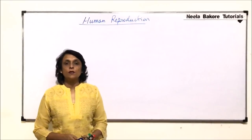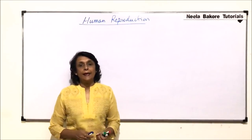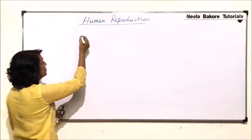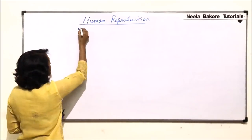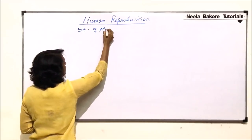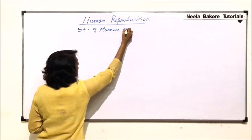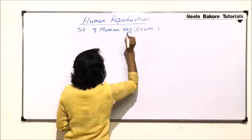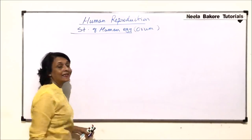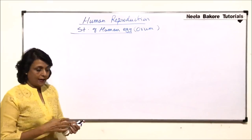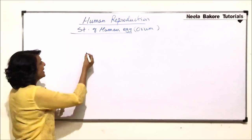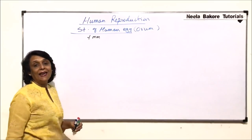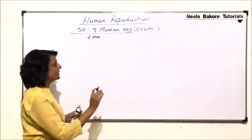In this video we will discuss the structure of the human egg, also known as the ovum, and then we will see various types of eggs produced in different animals. The human egg is a small cell, normally 0.1 millimeter in size, and it has a rounded structure.